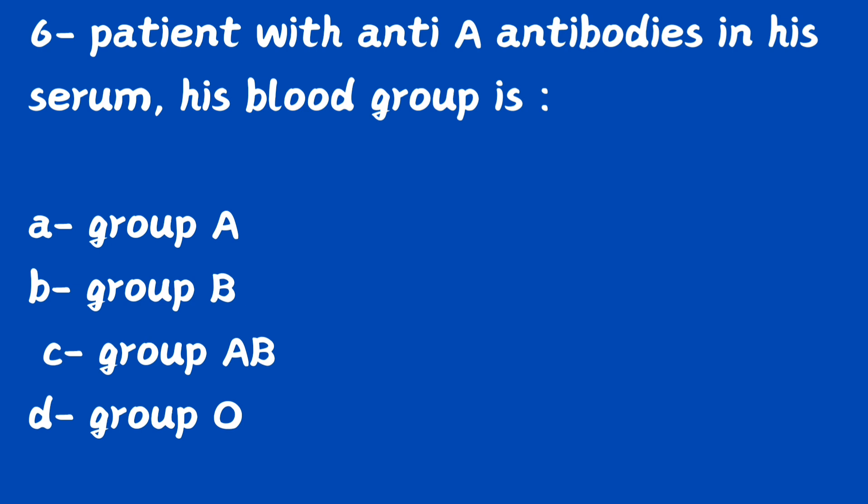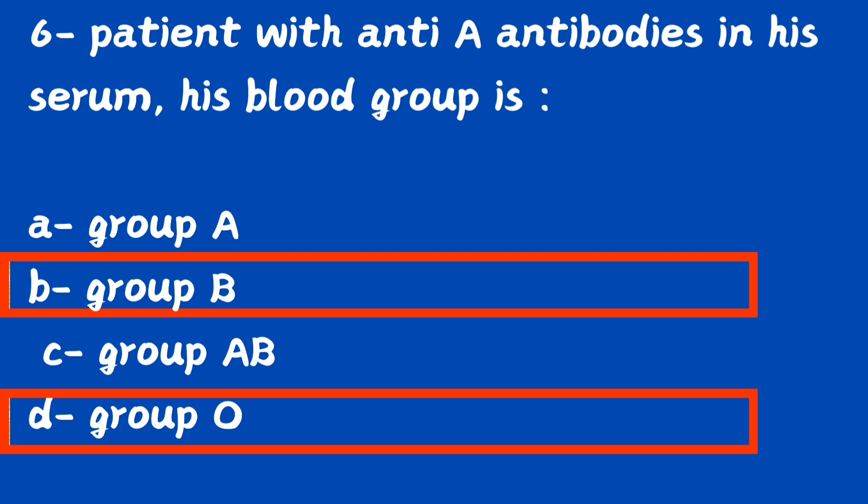Question number 6. A patient with anti-A antibodies in his serum — his blood group will be: option A, group A; option B, group B; option C, AB group; option D, O group. The right answer is both option B and D. Group B and group O will contain anti-A antibodies.